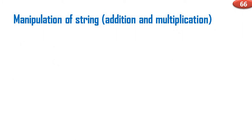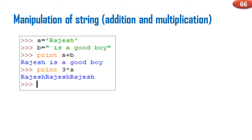Now, manipulation of strings — that means addition and multiplication of strings. Consider a program: a = 'Rajesh', b = 'is a good boy'. Print a + b. The result will be 'Rajeshis a good boy' — string concatenation joins them together.